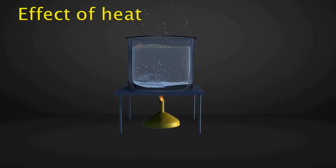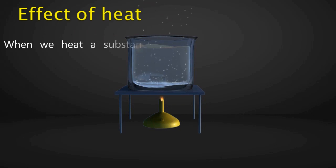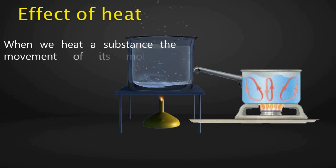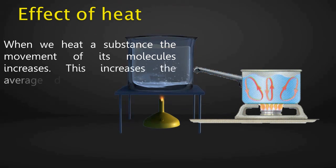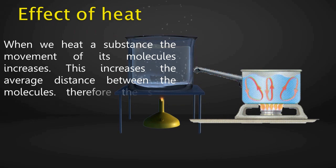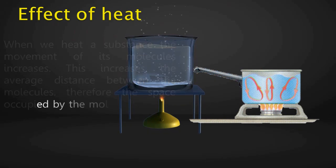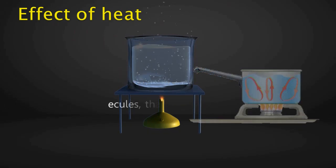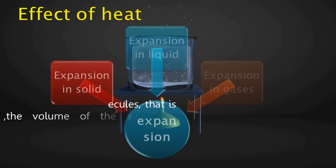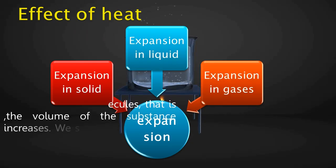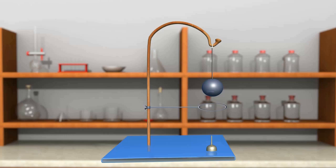Effect of heat: when we heat a substance, the movement of its molecules increases. This increases the average distance between the molecules. Therefore, the space occupied by the molecules — that is, the volume of the substance — increases. We say that heat causes expansion.